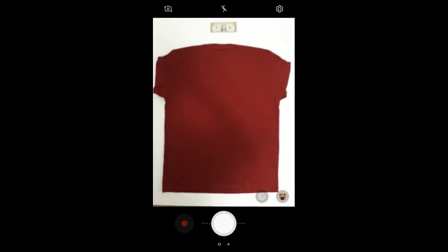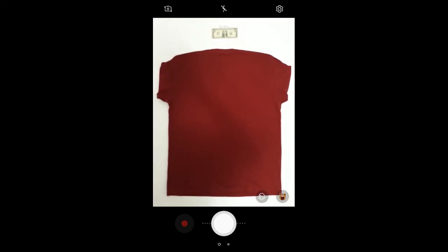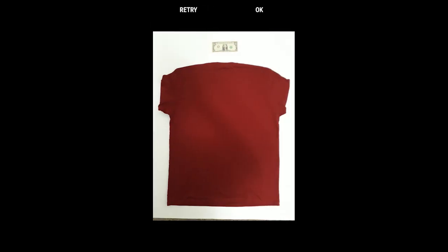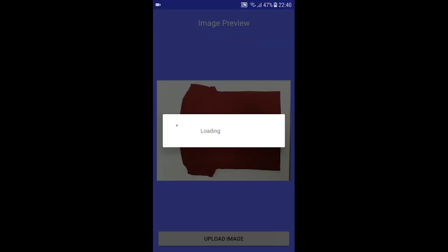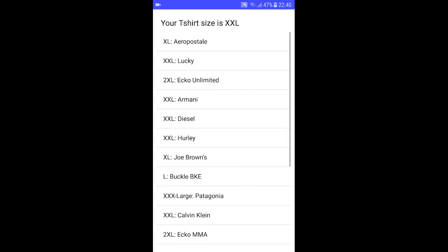Let us now look at the output of our project. Let's keep the clothing item on the workbench. Click a clear picture. Once the picture has been taken, we will let it process. After the processing is done, we can see that the size of the garment that we have kept comes out to be XXL. Thank you.